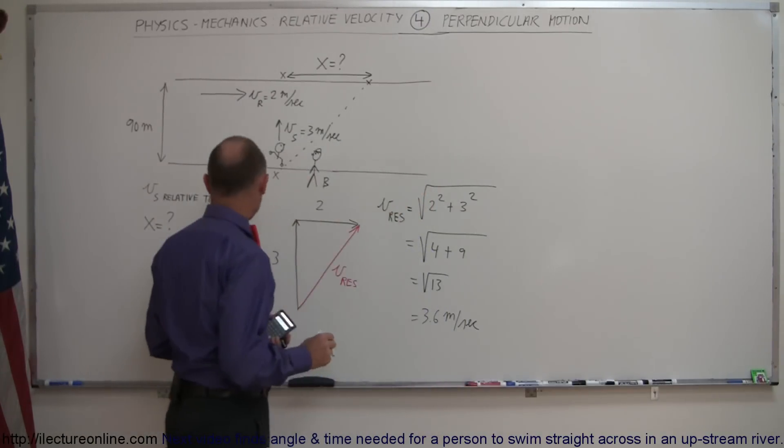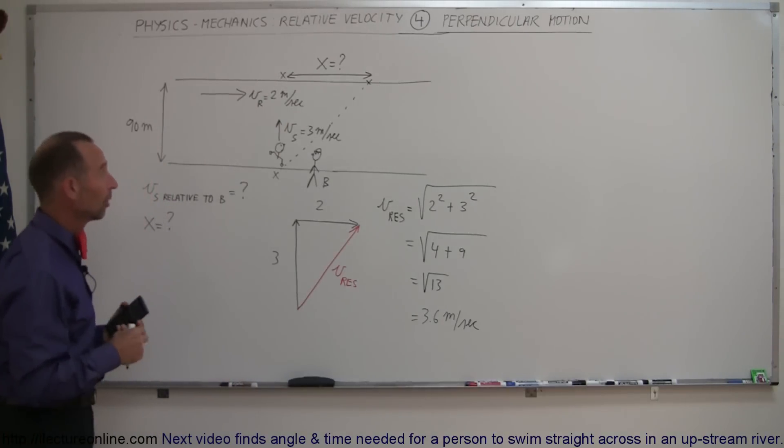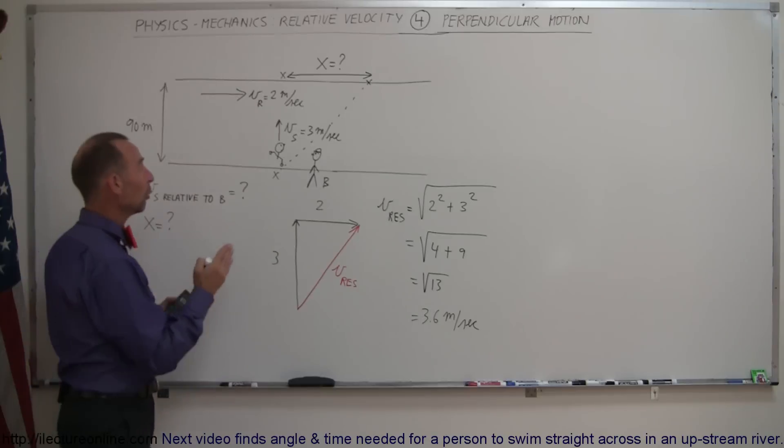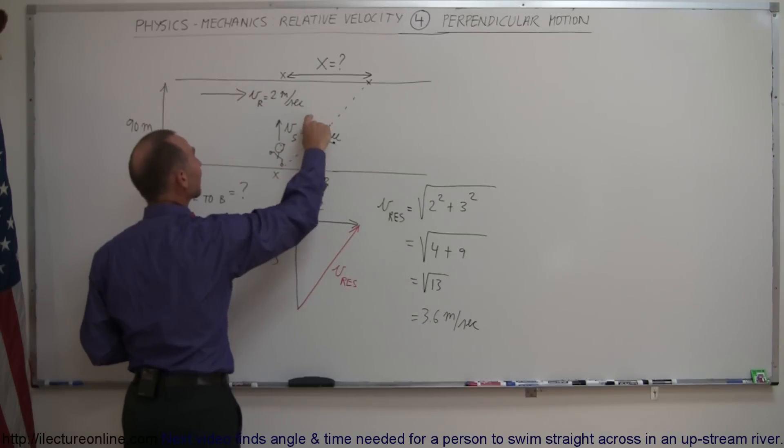Okay, now coming over here, I still have to find out how far downriver he'll end up when he gets to the other side. So now we need to know what is the component of the motion in this direction. Since he's swimming in this direction and the river is carrying him sideways, he will still swim across the river at this velocity.